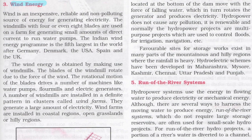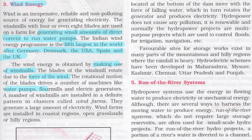Wind energy is also a renewable source of energy — inexpensive, reliable, and non-polluting — used for generating electricity. Windmills with four or even eight blades generate small amounts of direct current to run water pumps, etc. The Indian wind energy program is the fifth largest in the world after Germany, Denmark, USA, Spain, and the UK. The blades of the windmill rotate due to the force of the wind, driving machines like water pumps, flour mills, and electric generators. Clusters of windmills installed in a definite pattern generate large amounts of electricity and are installed in coastal regions, open grasslands, or hilly regions.